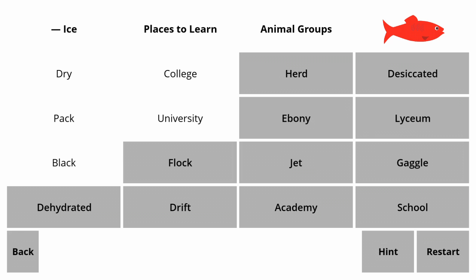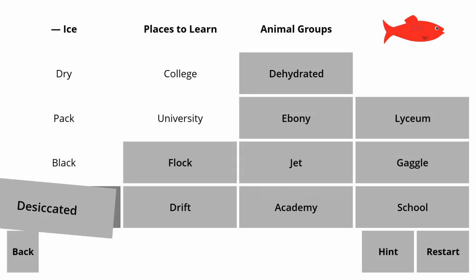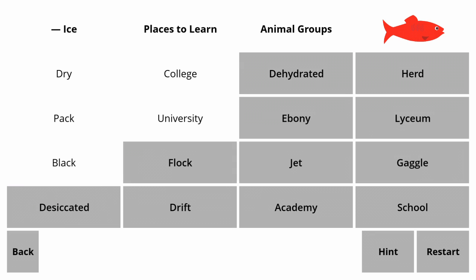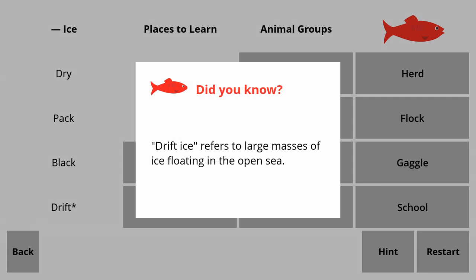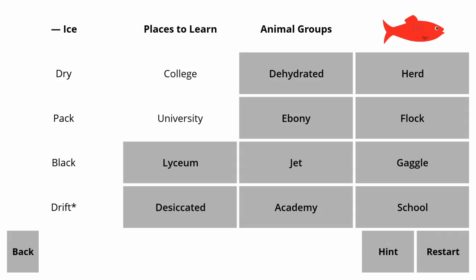Dry ice, pack ice, black ice. That was making me think of red hat, green hat, yellow hat — a little kid's book I had when I was little. Not herd ice — why did I do that? It wouldn't be ebony ice. Let's finish the other sets first. College, university — and do we have drift ice? Yes, that's it! Drift ice refers to large masses of ice floating in the open sea, I'm guessing a little smaller than an iceberg.